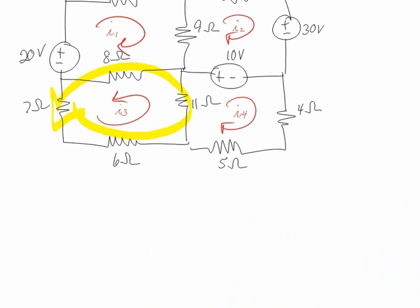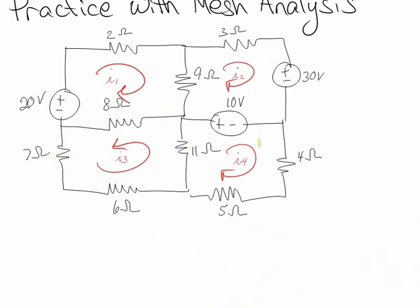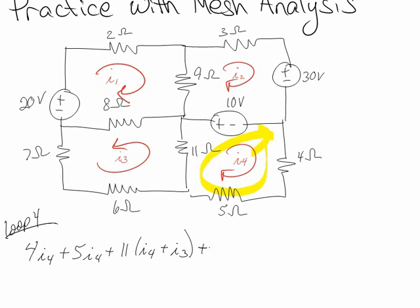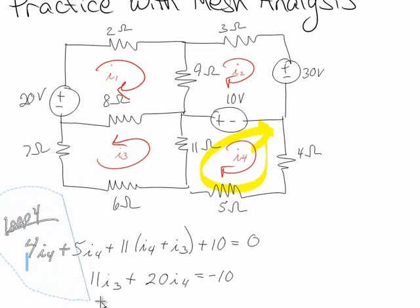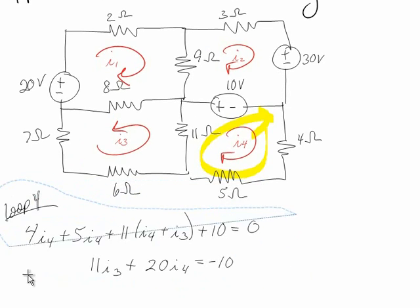Alright, now last loop. I want to start with the 4, so I have 4I4, plus 5I4, plus 11 — I4 is going with me and I3 is also going with me — and then when I go through the 10 volt source, it's plus 10 equals 0. So I have 11I3 plus — what's 4 plus 5 plus 11? That's 20 — 20I4, and that equals minus 10. And now I actually don't need the picture of the circuit anymore because I've got all the equations I need.